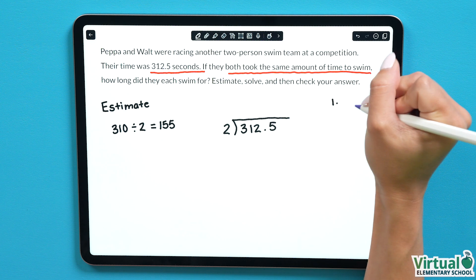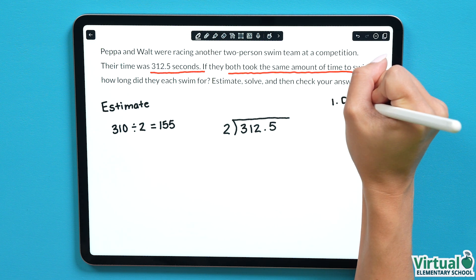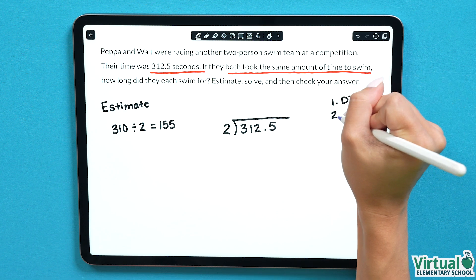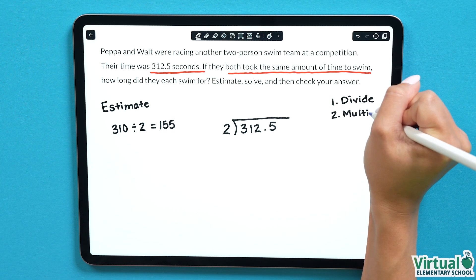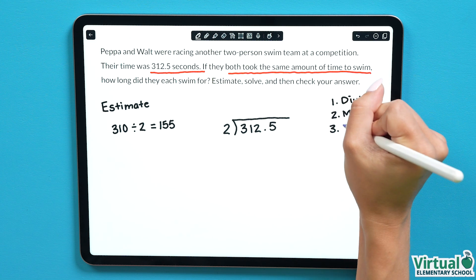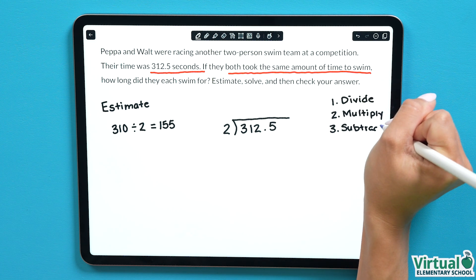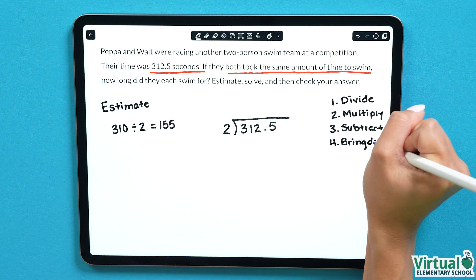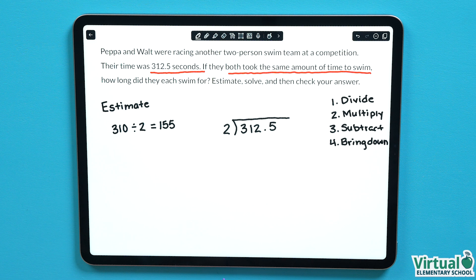Over here let's write our steps to recall them. Our first step in long division is to divide. Our second step is to multiply. Our third step is to subtract. And our fourth step is to bring down. Now that we have our steps and our long division equation set up, we can divide as normal as if this wasn't a decimal, but don't forget to keep the decimal throughout our solution.